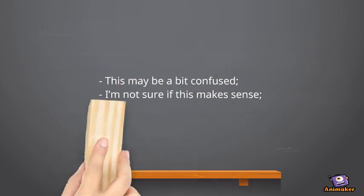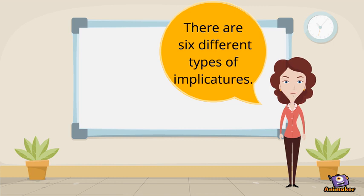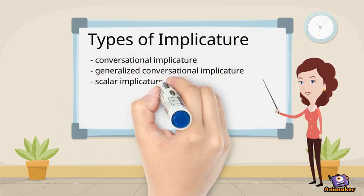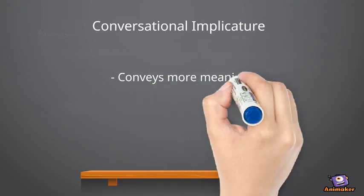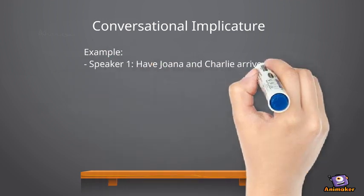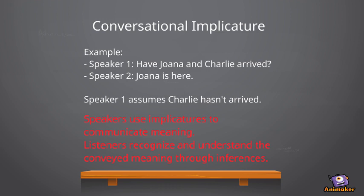Got this? Great! So now let's get to our last topic of the video. The following aspect is seen by many linguists as a central part of pragmatics: implicatures. There are six different types of implicatures: conversational, generalized conversational, scalar, particularized conversational, properties of conversational implicatures, and last but not least, conventional implicatures. Conversational implicatures convey more meaning than is being said. Speaker one assumes that Charlie hasn't arrived. Speakers use implicatures in order to communicate meaning and the listener has to recognize and understand the conveyed meaning through inferences.